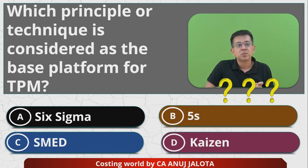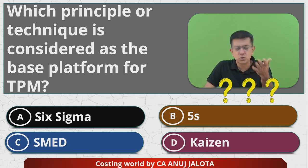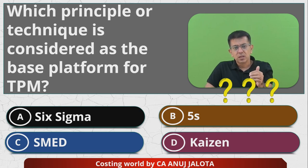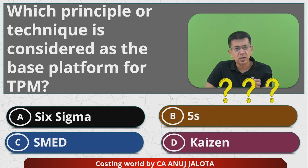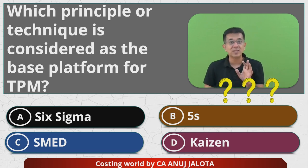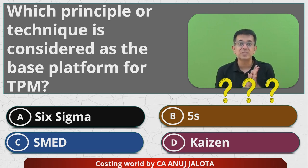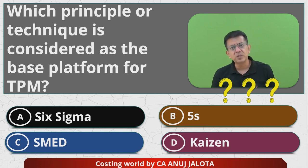SMED stands for Single Minute Exchange of Die. It's not covered in the module, but for reference: suppose in book printing you use one color and print half the book in black, and the remaining has to be printed in red. You will have to exchange the die from black to red, and that should not take much time. That is SMED — Single Minute Exchange of Die.